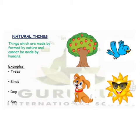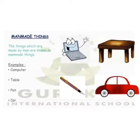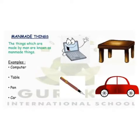So these are known as natural things. Agar ye natural things hain, toh man-made things kya hogi? Things that are made by man are known as man-made things. Example — car jisse aap ghumne jaate ho, table jiske upar aap padhai karte ho — ye sab cheezein man-made things hain.